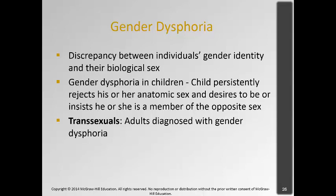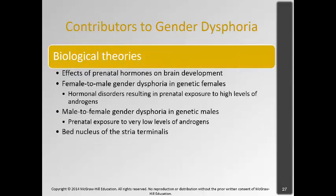Some say that transsexuals are adults diagnosed with gender dysphoria. Biological theories — which have significant support — point to the effects of prenatal hormones on the developing brain. Females with male gender dysphoria would have had high levels of androgen exposure during development, so the brain develops as male while the genitalia are female. For males with female gender dysphoria, there are low levels of androgen, so the brain develops as female while the genitalia are male. This may be happening in the bed nucleus of the stria terminalis.